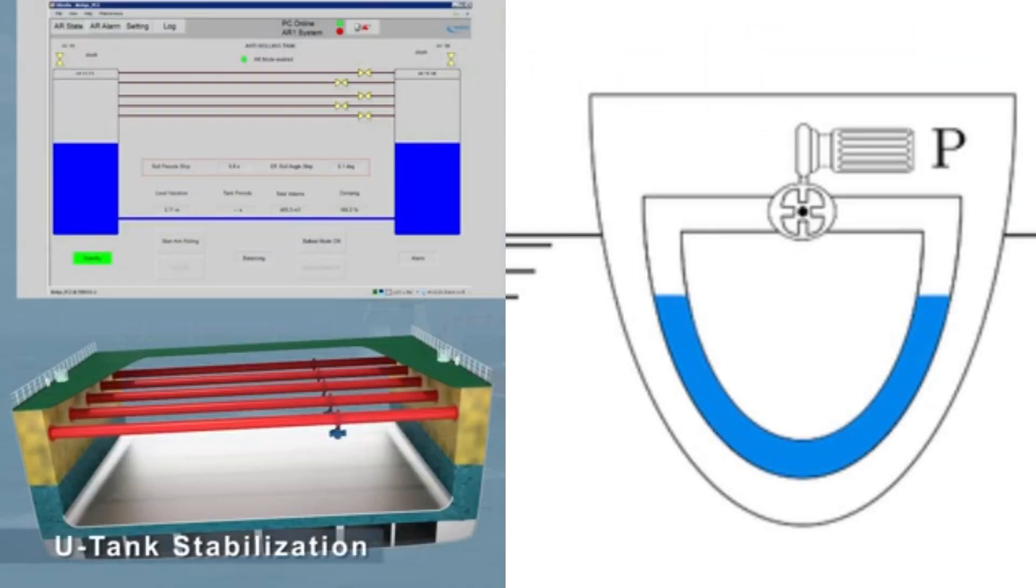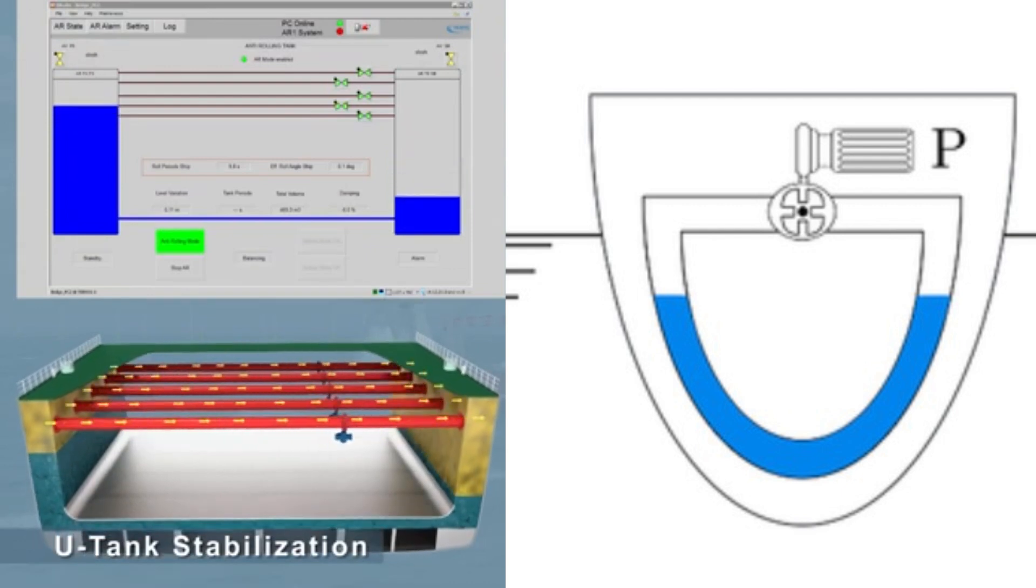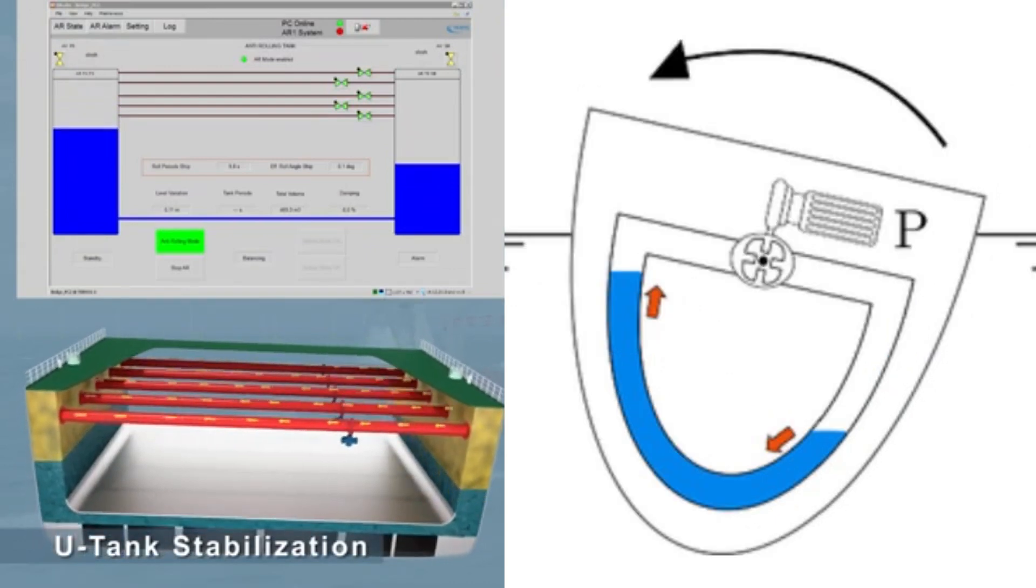The pump, labeled P, transfers air between tanks to displace water and create a corrective lever effect.